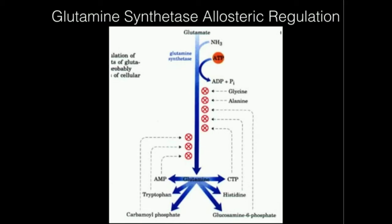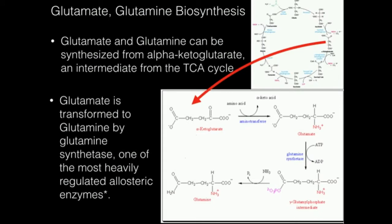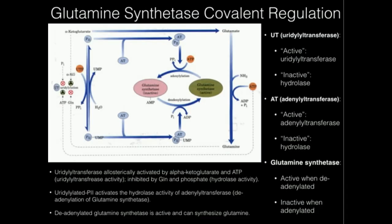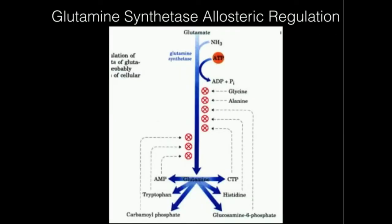Welcome back. In the previous two videos, we talked about glutamine and glutamate biosynthesis, and we talked about how glutamine synthesis is from glutamate by the action of the enzyme glutamine synthetase, and then we went over the covalent regulation of glutamine synthetase. Now, I think that the allosteric regulation of glutamine synthetase is actually a little bit easier to understand, so let's go over it now.